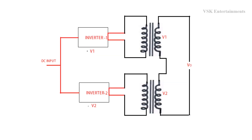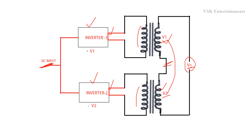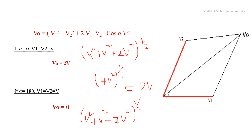This is the circuit diagram related to the internal voltage control technique. These are the two inverters connected in series, both supplied by DC input voltage. The outputs of inverter one and inverter two are connected to the primary winding of a transformer, and the secondary winding is again connected in series. Here V0 is the output voltage, and V1 and V2 are the secondary winding voltages. Alpha is the phasor difference between secondary winding voltages V1 and V2.